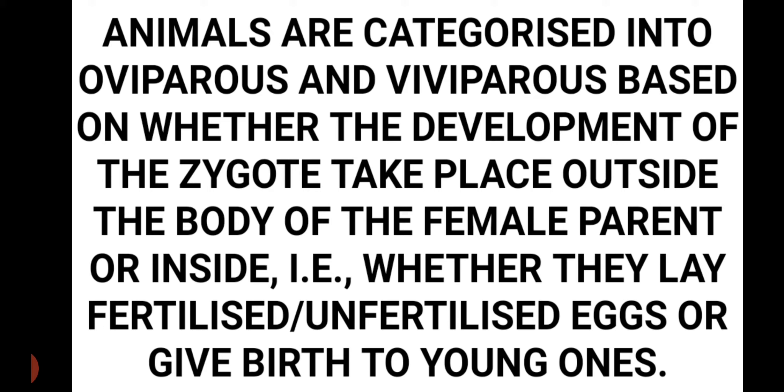Animals are categorized into oviparous and viviparous based on whether the development of the zygote takes place outside or inside the body of the female parent — in other words, whether the organism lays fertilized or unfertilized eggs, or gives birth to young ones.